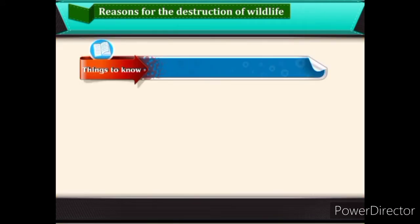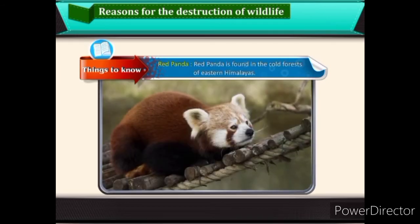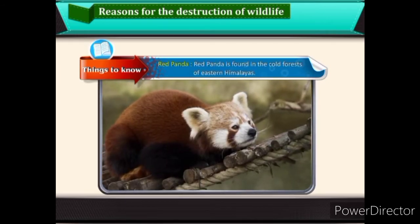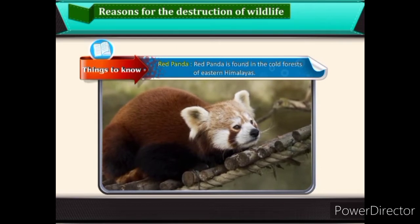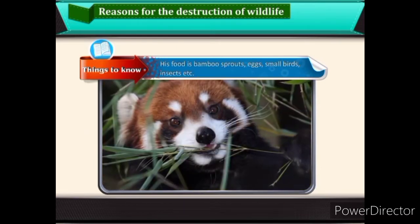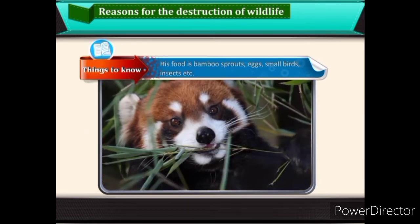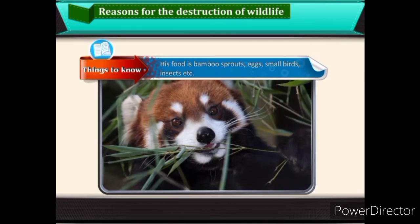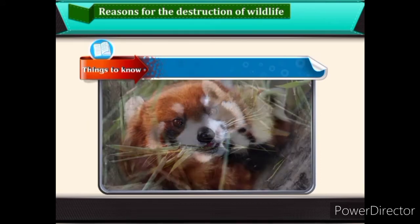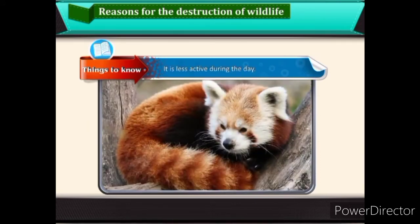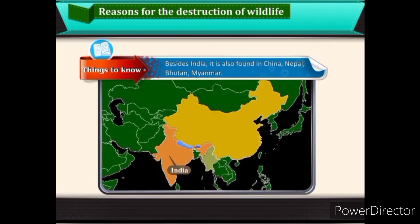Things to know — Red Panda: The Red Panda is found in the cold forests of eastern Himalayas. Its food includes bamboo sprouts, eggs, small birds, insects, etc. It is less active during the day. Besides India, it is also found in China, Nepal, Bhutan and Myanmar.